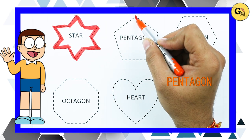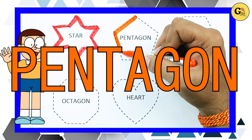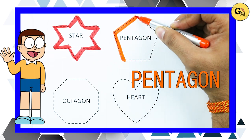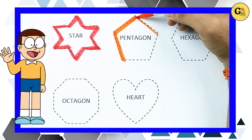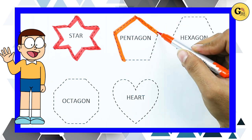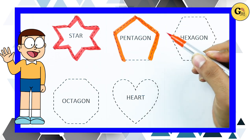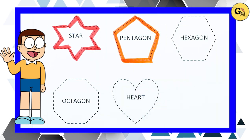Pentagon: one line, two line, three line, four line, five line. It's a pentagon.